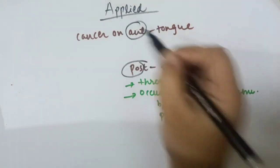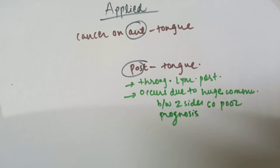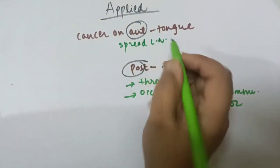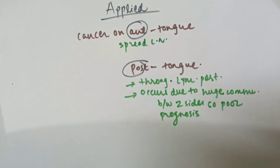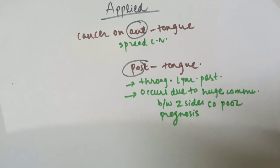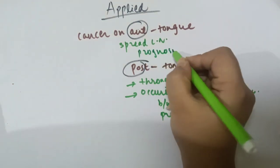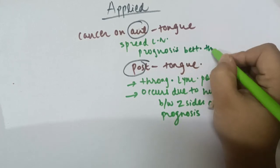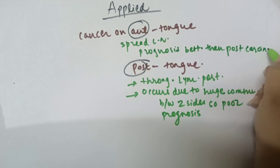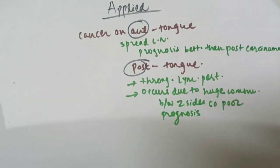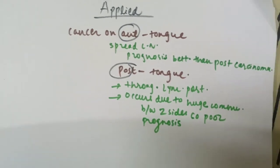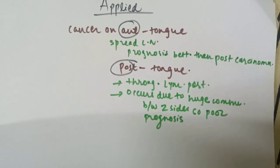For cancer on the anterior part of the tongue, it spreads to the lymph nodes on the anterior side — that is the submandibular lymph nodes and the deep cervical group of lymph nodes at the central portion of the anterior two-third. The prognosis for anterior tongue carcinoma is better than that for the posterior side. This covers the applied anatomy of the lymph node drainage and nerve supply of the tongue.